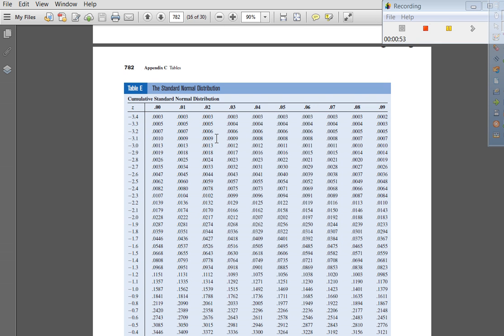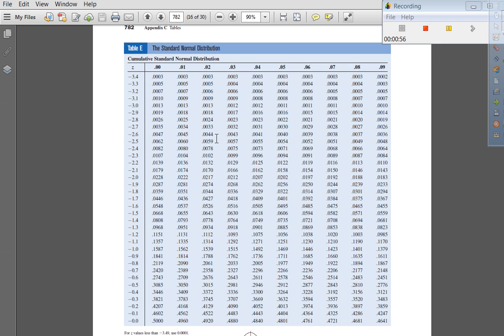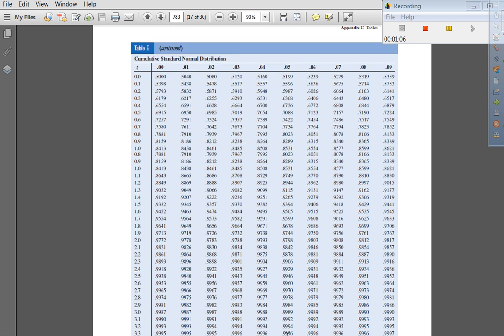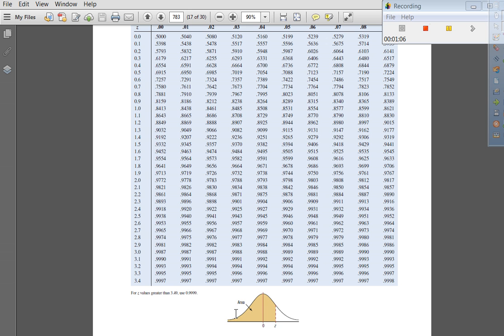And so Table E, this newer version of Table E, is going to show you the area under the curve from that Z-score all the way to the left. Okay, let's go back and do a couple examples.